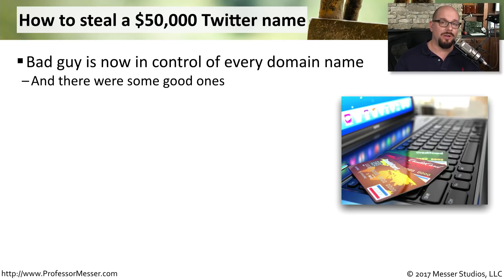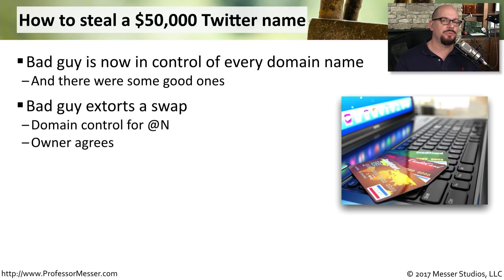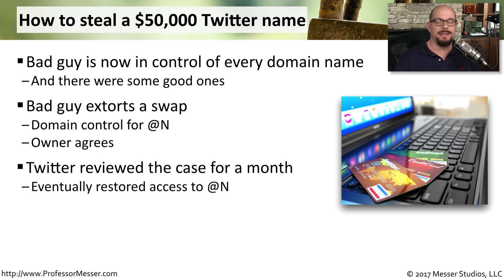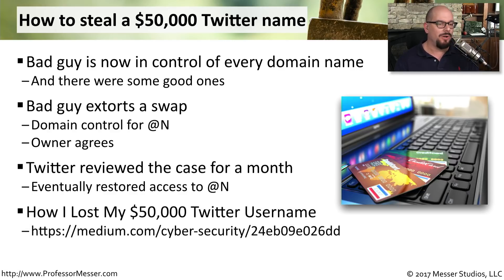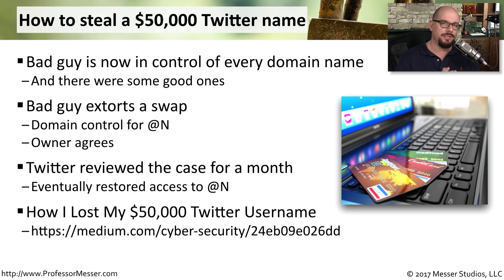At that point, the bad guy owned all of Hiroshima's domains, had access and control over everything, and then told him: how about we swap? I'll give you access to your domains again — all you have to do is give me the @n username. At that point, there was nothing else he could do. He agreed to the swap, then went to Twitter and reported that this was a problem, that this had been taken from him illegally. It took about a month, but eventually Twitter gave him access again to his @n username. This is social engineering that involved multiple organizations, but ultimately the bad guy was able to get exactly what he wanted just by using these social engineering techniques.